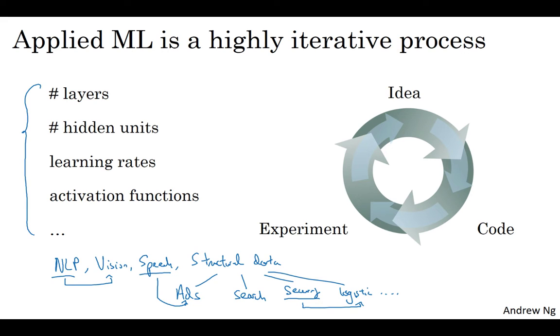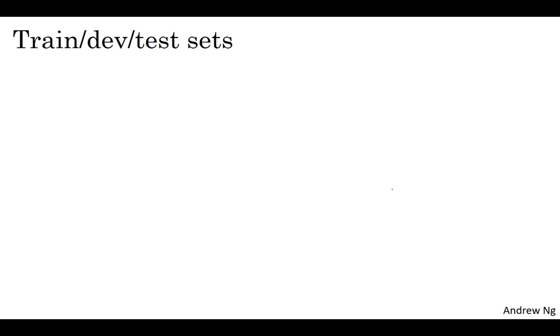So for a lot of applications, I think it's almost impossible, even very experienced deep learning people find it almost impossible to correctly guess the best choice of hyperparameters the very first time. And so today, applied deep learning is a very iterative process where you just have to go around this cycle many times to hopefully find a good choice of network for your application. So one of the things that determine how quickly you can make progress is how efficiently you can go around this cycle. And setting up your data sets well, in terms of your train, development, and test sets, can make you much more efficient at that.